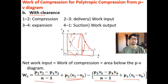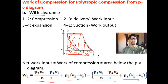This rectangle also covers extra area that has to be subtracted, including a small additional part. So minus the work of process 3 to 4 reduces that area. Then subtracting the area below 4 to 1 gives the net area — only the area enclosed by 1, 2, 3, 4, 1. This is how you compute the net work of compression.